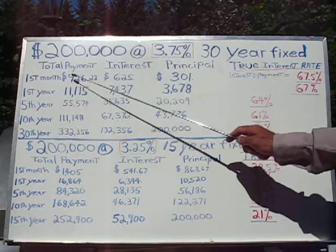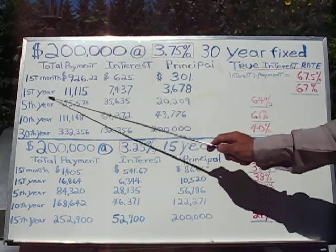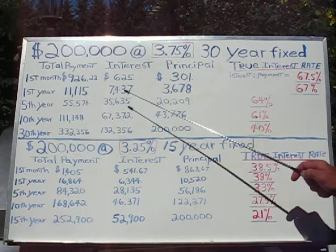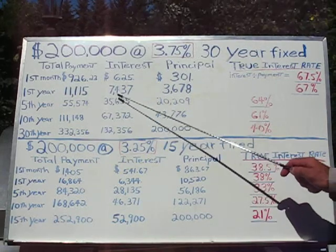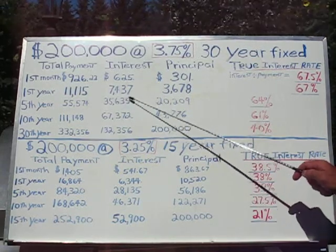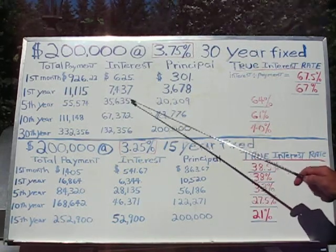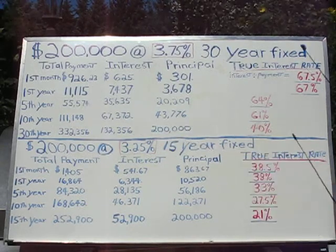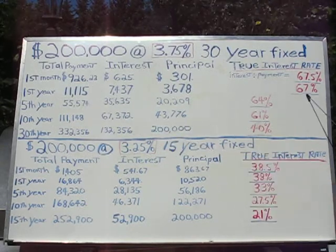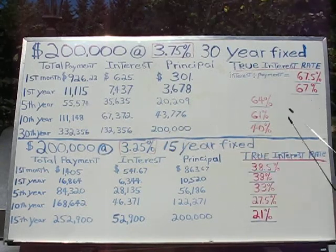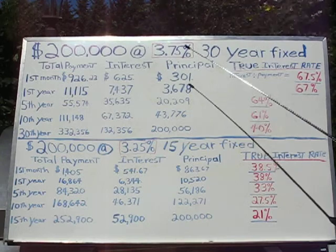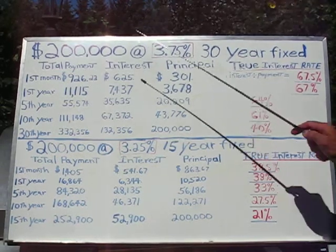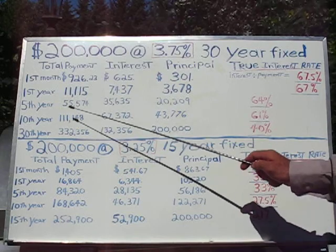Month one times 12 — one year of payments — you've paid in about $11,000, of which $7,437 went to interest. Divide that interest by total payments, and you get a true interest rate of 67%. Nowhere near the illusion rate of 3.75%.